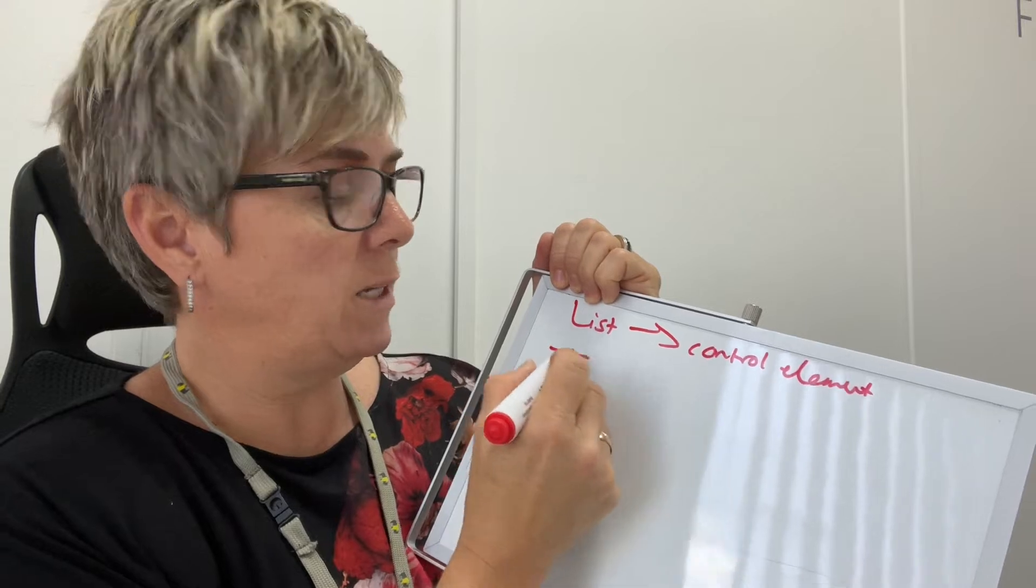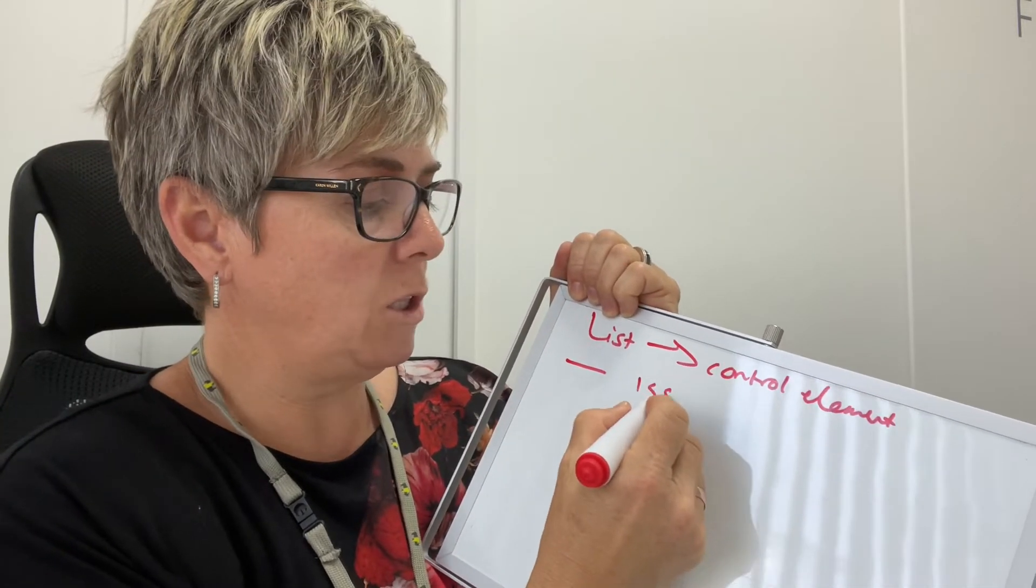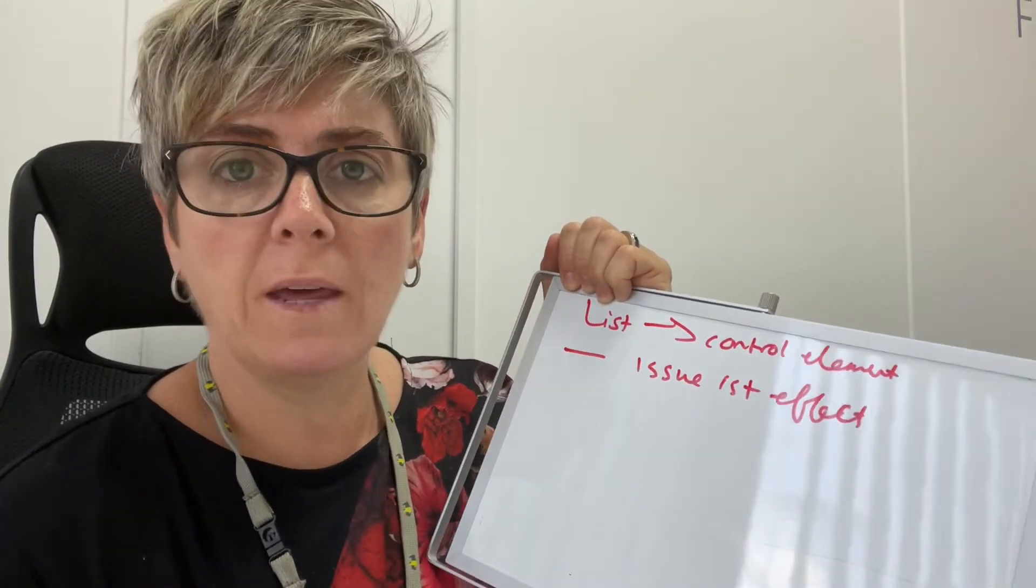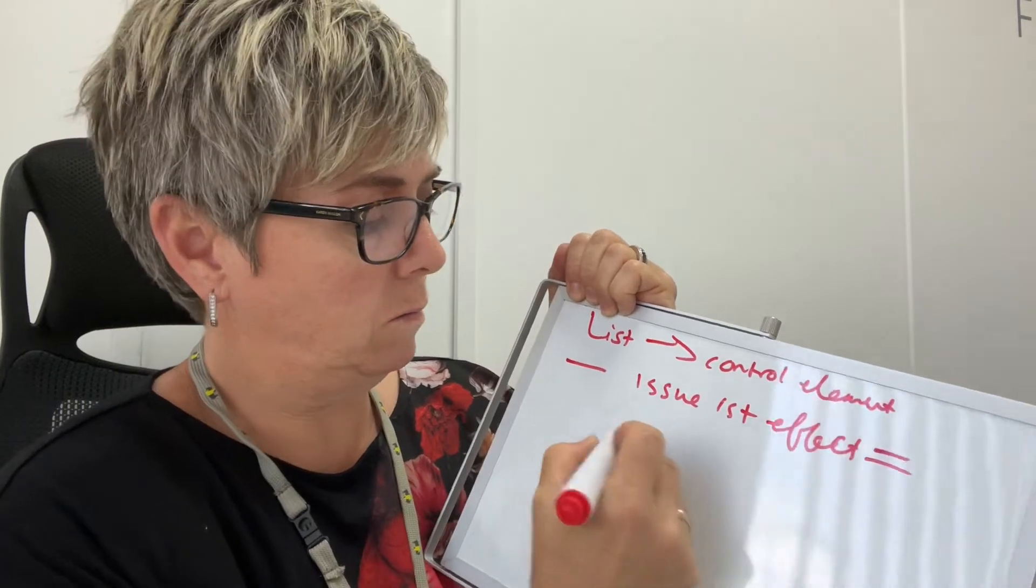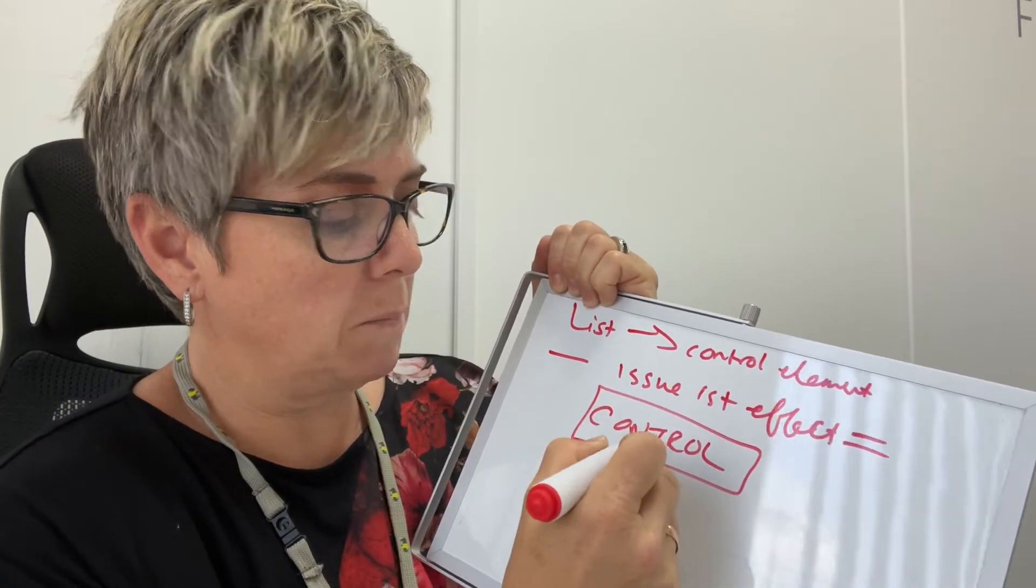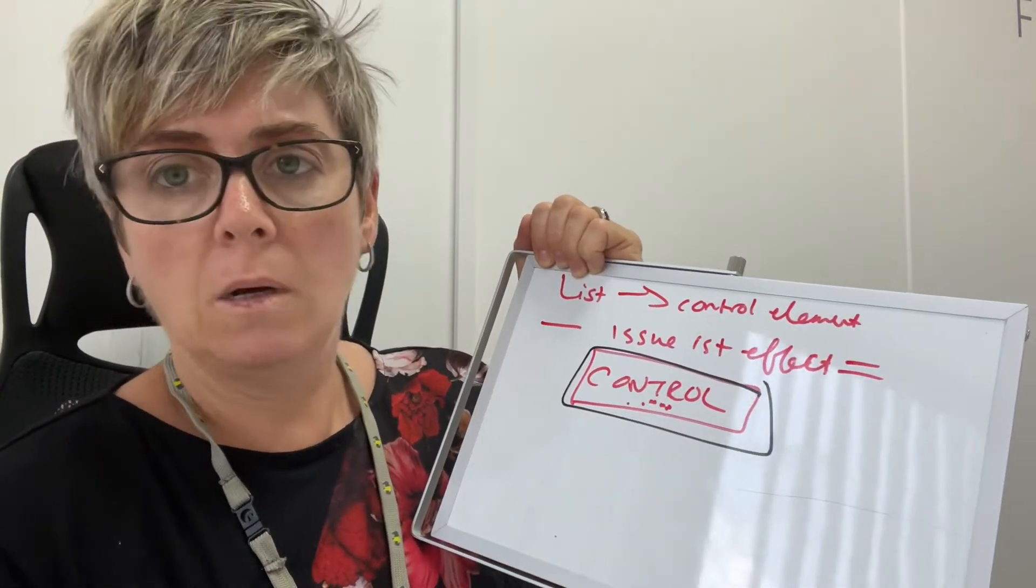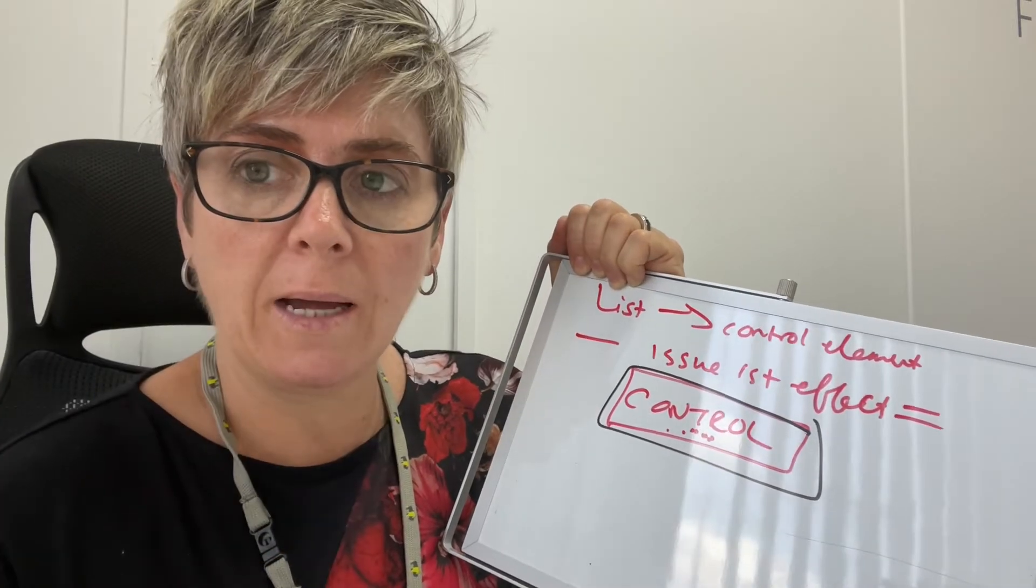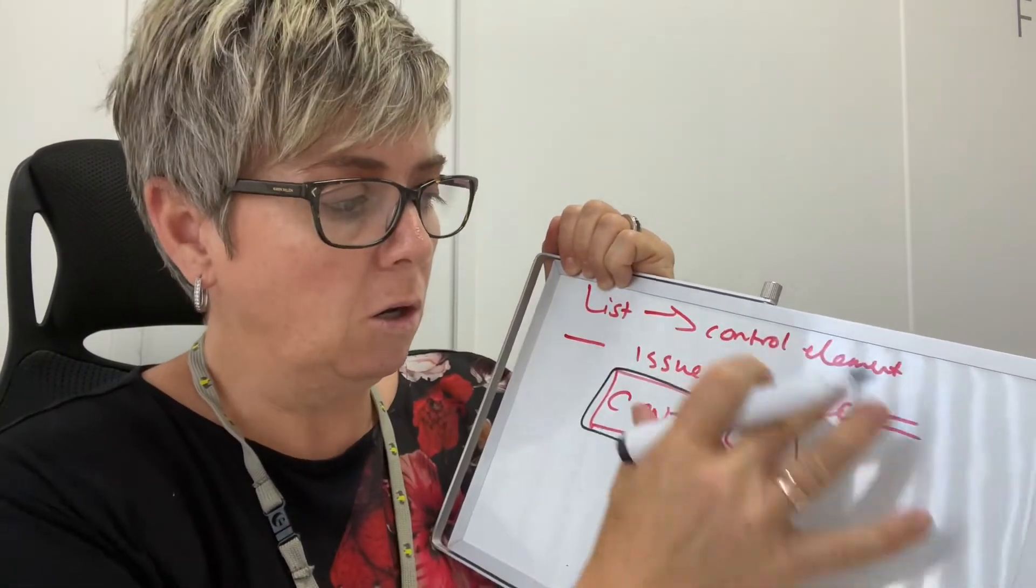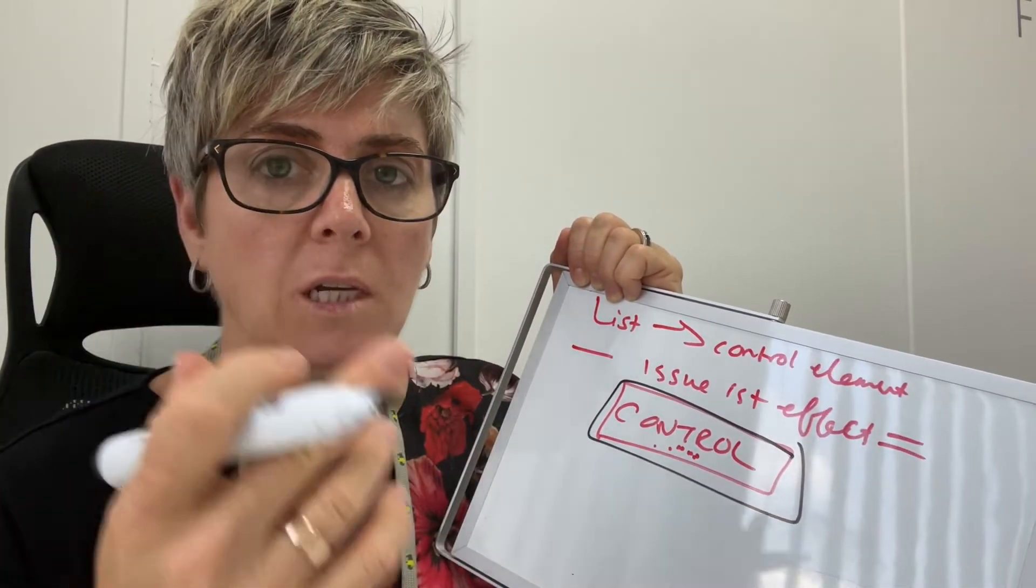When you write it down and then discuss with yourself what the issue is, the effect, we can then start to take control. That is what's missing with overwhelm: the control element. When you take control back and you've got the ability to see it, look at it, reflect on it, suddenly you see the wood from the trees.